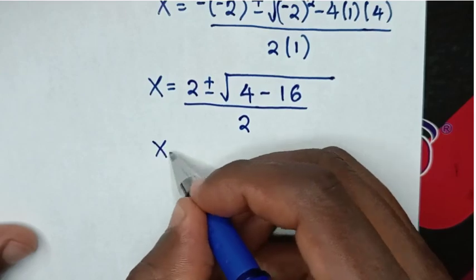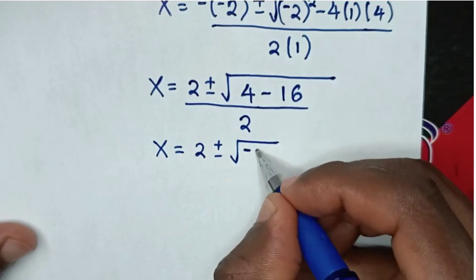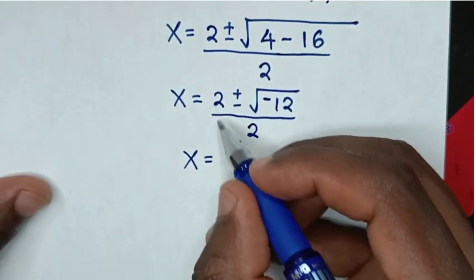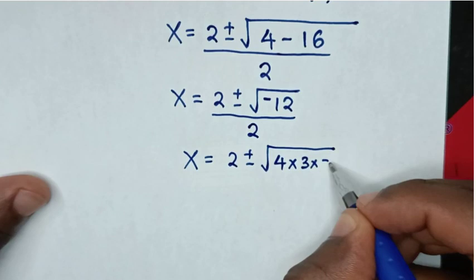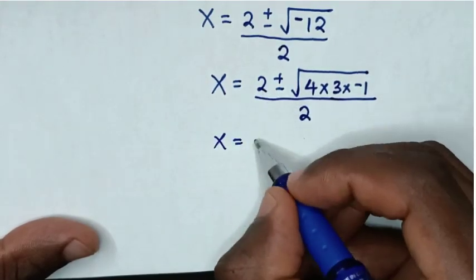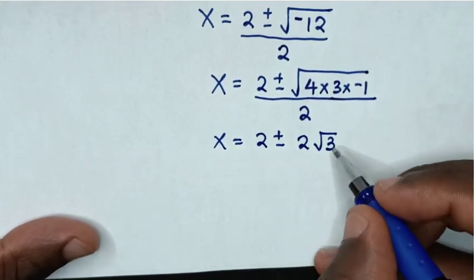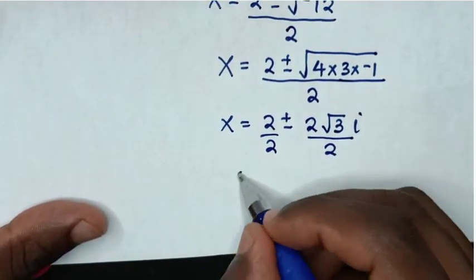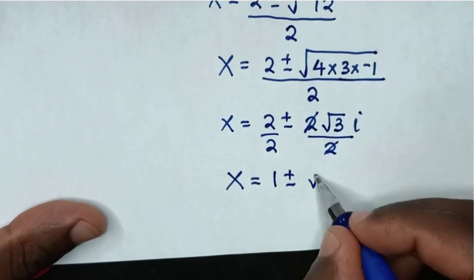In the next step, x = 2 ± √(-12) over 2. Now √(-12) is the same as √(4 × 3 × -1). So √4 = 2, giving 2√3, and √(-1) = i. So x = (2 ± 2√3·i) / 2, which simplifies to x = 1 ± √3·i.